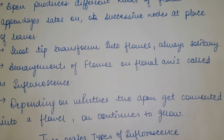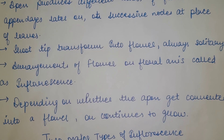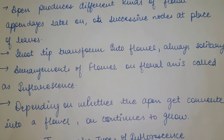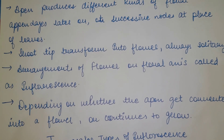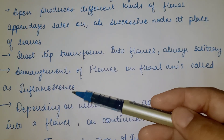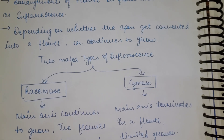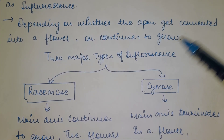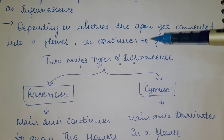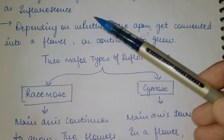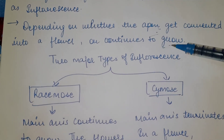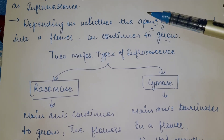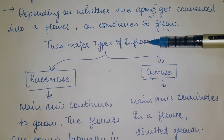The arrangement of flowers on the floral axis is known as inflorescence. It also depends on how the apex of a plant gets converted into a flower and continues to grow — how the tip of the plant grows. Depending on this, we have two major types of inflorescence: Racemose and Cymose.